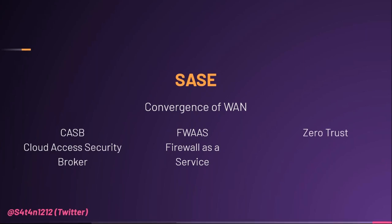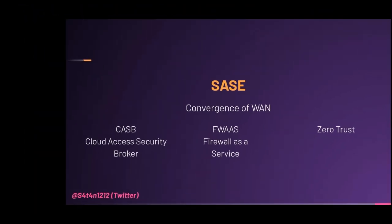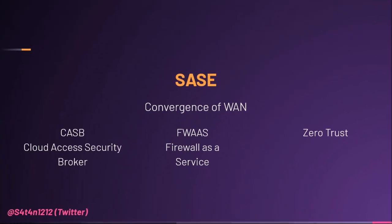SASE is the convergence of wide area networking (WAN) and network security services — including CASB, Firewall as a Service, and Zero Trust — into a single cloud-delivered service model, according to Gartner. SASE capabilities are delivered as a service based upon the identity of the entity, real-time context, enterprise security compliance policies, and continuous assessment of risk and trust throughout sessions.